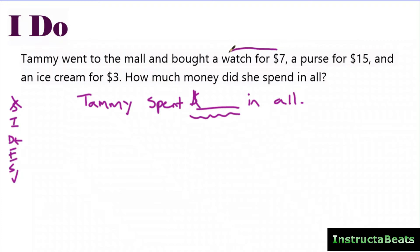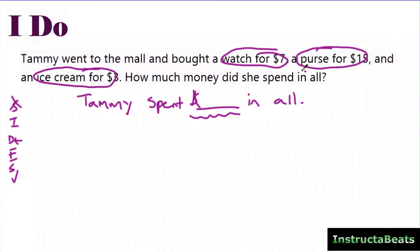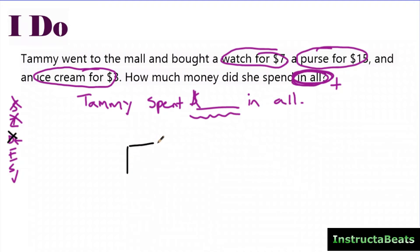She bought a watch for $7, a purse for $15, and an ice cream for $3. How much money did she spend in all? I'm circling key information and annotating 'in all' with an addition sign. Because I know I'm bringing things together to find the total, I'm going to draw a part-whole model.